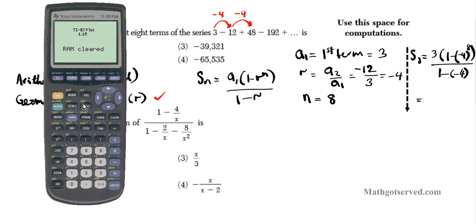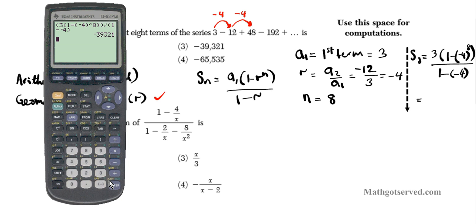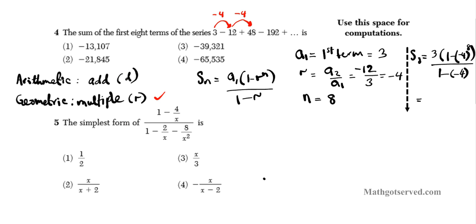When inputting a complicated expression like this with a lot of grouping, you have to be really careful to avoid grouping errors. For the numerator: parenthesis 3 times (1 minus (negative 4) raised to the 8th power), close the numerator. Then divided by parenthesis (1 minus negative 4), which is 1 plus 5. Enter. The answer is negative 3921. So our answer is option number 3.